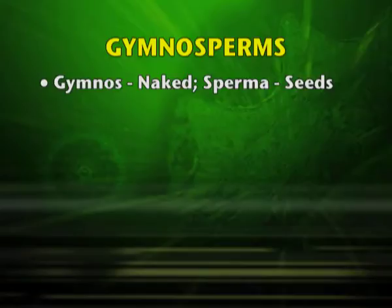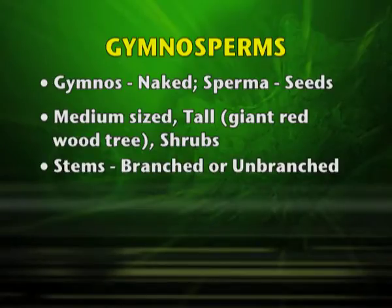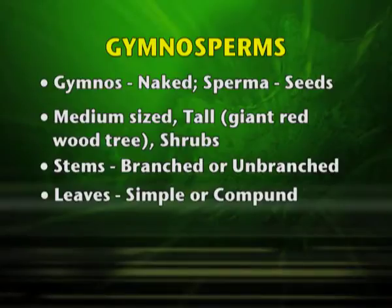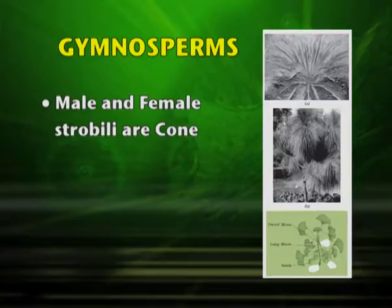Gymnosperms are naked-seeded plants — 'gymnos' means naked and 'sperma' means seeds. They may be medium-sized plants, huge trees like the giant redwood known as the sequoia tree, or shrubs. The stems are branched or unbranched and leaves may be simple or compound. They are heterosporous, producing haploid microspores and megaspores found in sporangia borne on sporophylls. The male and female strobili are known as cones — for example, the cone of a pine, referred to as the strobilus.